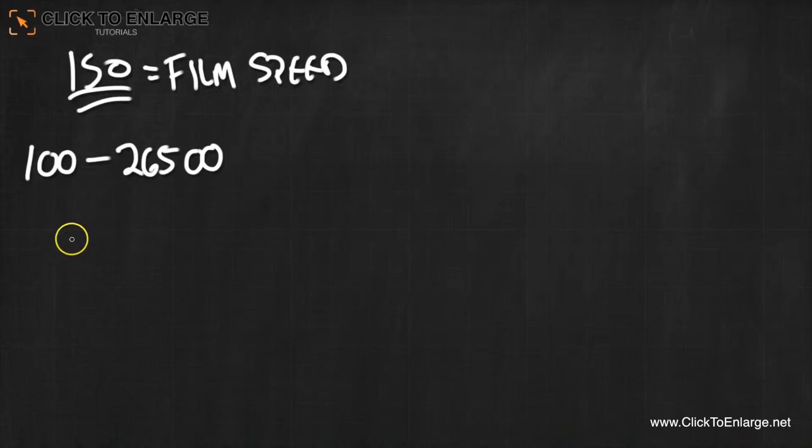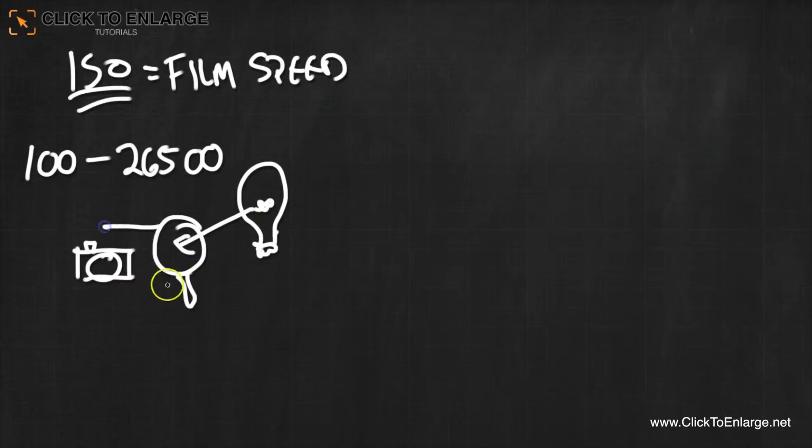So basically, when you increase this number here, you're making the camera sensor—let's pretend this is a camera—you're making this camera more sensitive to light. So those numbers act like a magnifying glass. So if this is the light, a little light bulb going into the magnifying glass, it controls how much or how little it goes inside.